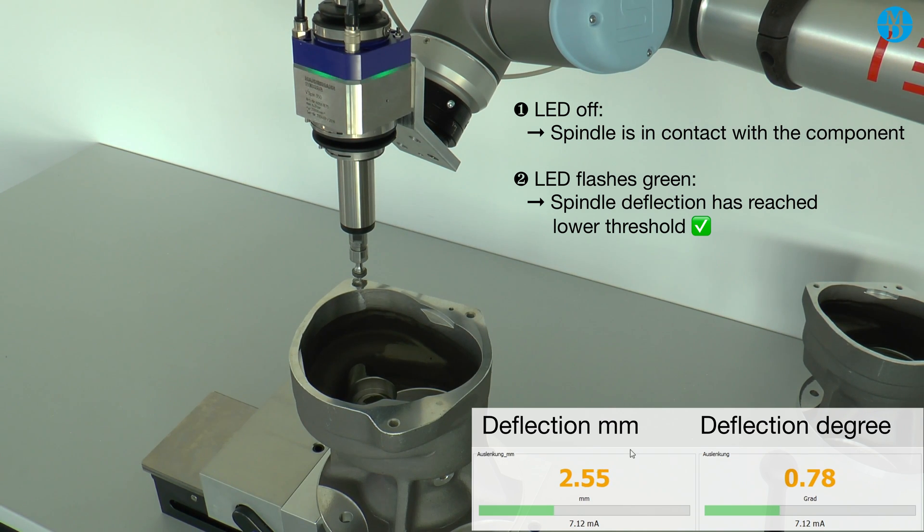Once in contact, we can see the spindle's optical indicator turn green and hear the spindle's acoustic indicator beep. As soon as we pass the low threshold of deflection, the optical indicator flashes. This green flashing indicates that we are in the optimal threshold for the spindle.